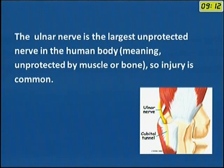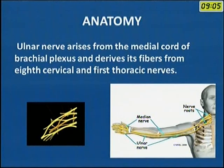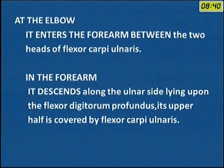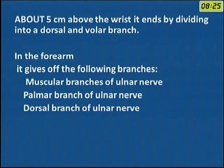The ulnar nerve enters the cubital tunnel behind the medial epicondyle. It is the continuation of the medial cord of the brachial plexus and derives its fibers from the C8 and T1 roots. It has various branches going up to the little finger and the medial part of the ring finger. At the elbow it enters the two heads of the flexor carpi ulnaris. In the forearm it descends along the ulnar side of the flexor digitorum profundus, covered by the flexor carpi ulnaris. About 5 cm above the wrist it divides into dorsal and volar branches.